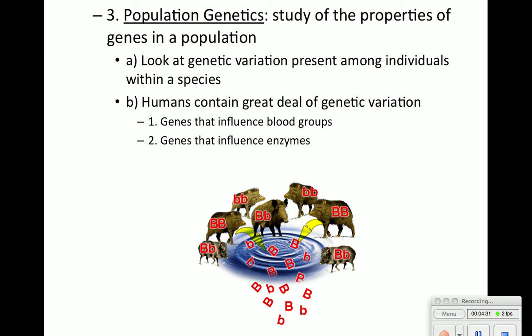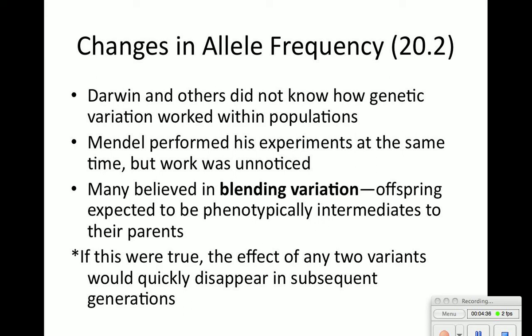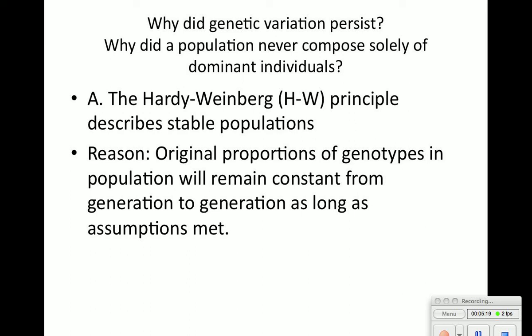Darwin and others did not know how genetic variation worked within populations. Mendel performed his experiments with pea plants at the same time, but his work was unnoticed — lost in his notebooks until uncovered years later. Many scientists believed in blending variation: mix a red and white flower and get pink. If true, variants should disappear over time, but that wasn't happening. So why did genetic variation persist? Why did populations never consist solely of dominant individuals? Here comes the Hardy-Weinberg principle.